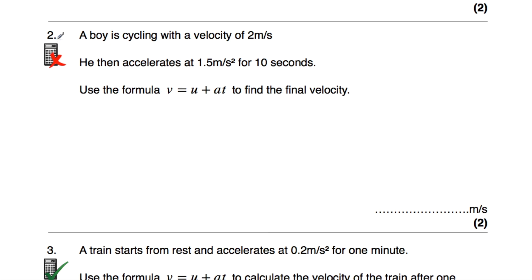Question number 2: a boy is cycling with a velocity of 2 metres per second — that's his initial velocity, u. He then accelerates at 1.5 metres per second squared for 10 seconds. So we've got a, the acceleration, and the time. We've been asked to use v equals u plus at to find his final velocity. So we've got u, his acceleration a, and the time t.